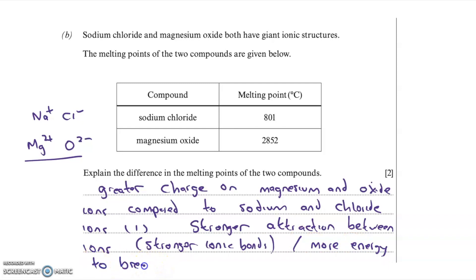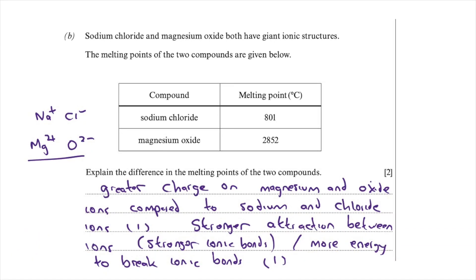You get one mark if you said there's a greater charge on the magnesium and oxide ions compared to sodium and chloride ions. You get the second mark if you said this results in stronger attraction between the ions — stronger ionic bonds — or that more energy is needed to break the ionic bonds because of this stronger attraction.